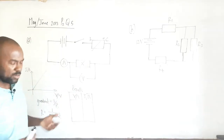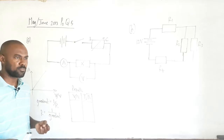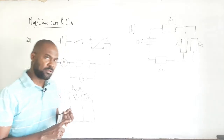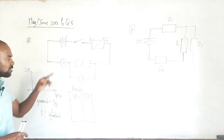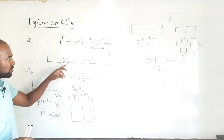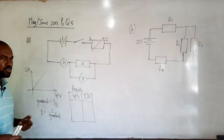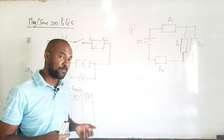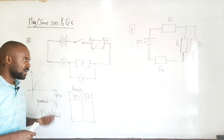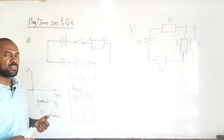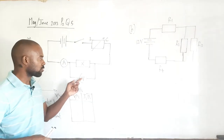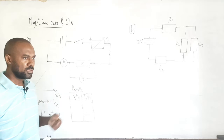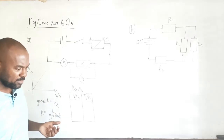In order to determine the resistance of the conductor, we need to measure the current flowing through it. To do that we have an ammeter connected in series with the conductor. We also need to determine the voltage or PD across the conductor, and to do that we have a voltmeter connected across, or in parallel with, the conductor.